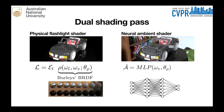We run two shading passes. For the flashlight reflection, we use a physically-based shading model that is able to constrain the material reflectance properties. Additionally, we run a neural ambient shader that defines a neural light field. Unlike previous methods that explicitly integrate ambient lights, our ambient shader is not guaranteed to be physically accurate, but proved to work well in practice.